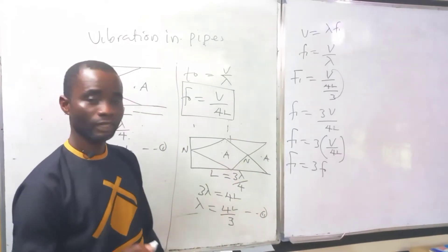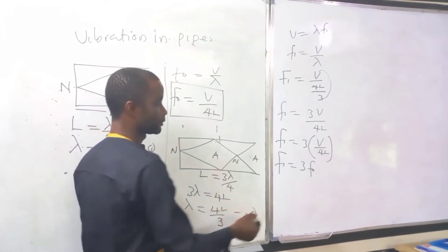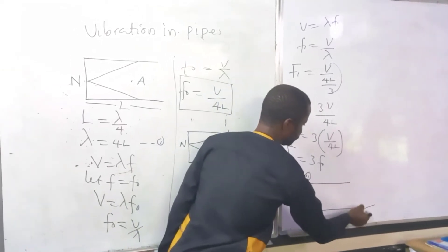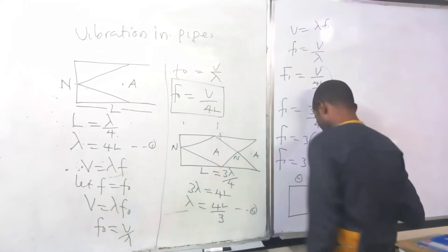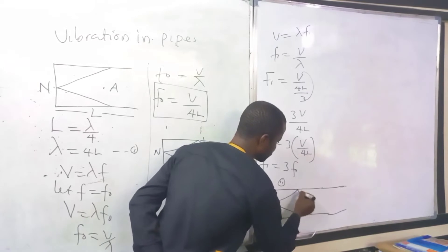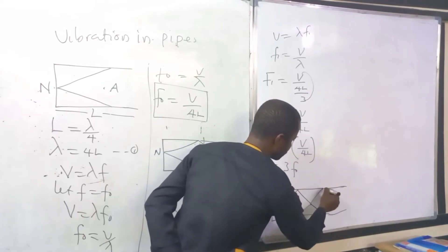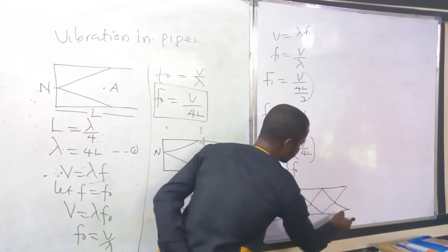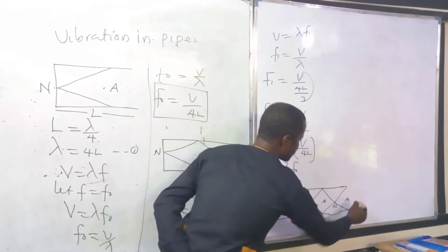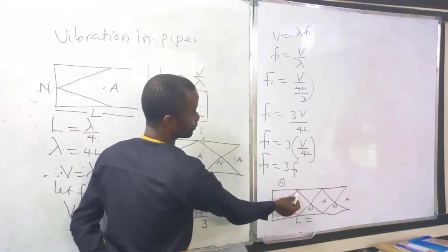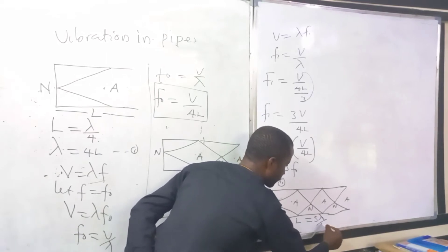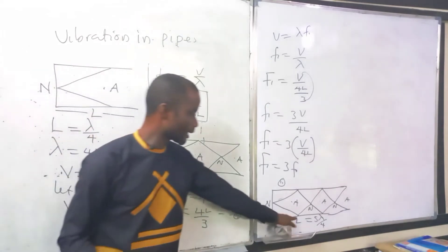Now let's get the second overtone by drawing another air column. We have node, anti-node, node, anti-node, node, anti-node. Counting the segments: 1, 2, 3, 4, 5 — that gives L equal to 5 lambda over 4.